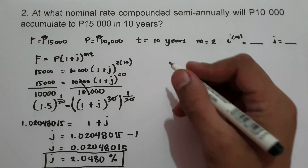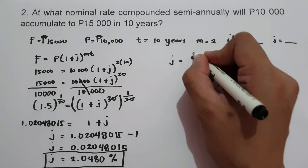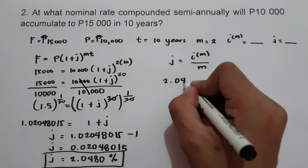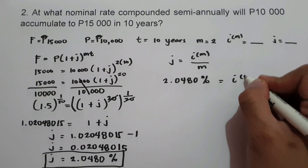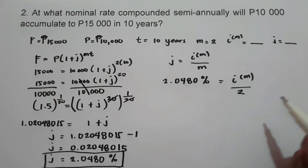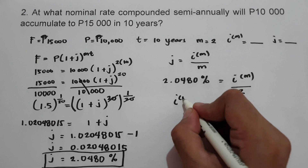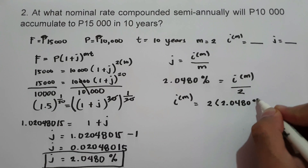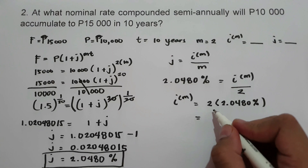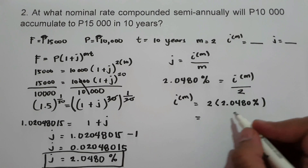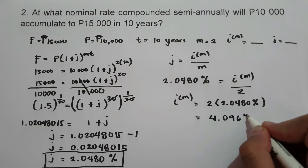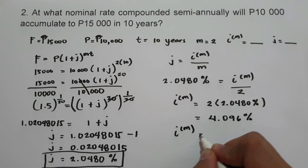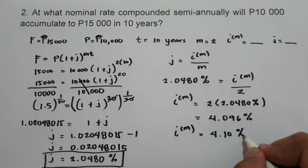To find the nominal rate, we use J equals I^M over M, where J is 2.0480% and M is 2. Multiplying M by the value of J, I^M equals 2 times 2.0480%, which is 4.096%. Writing our answer in at least 2 decimal places, I^M equals 4.10%. This is our answer.